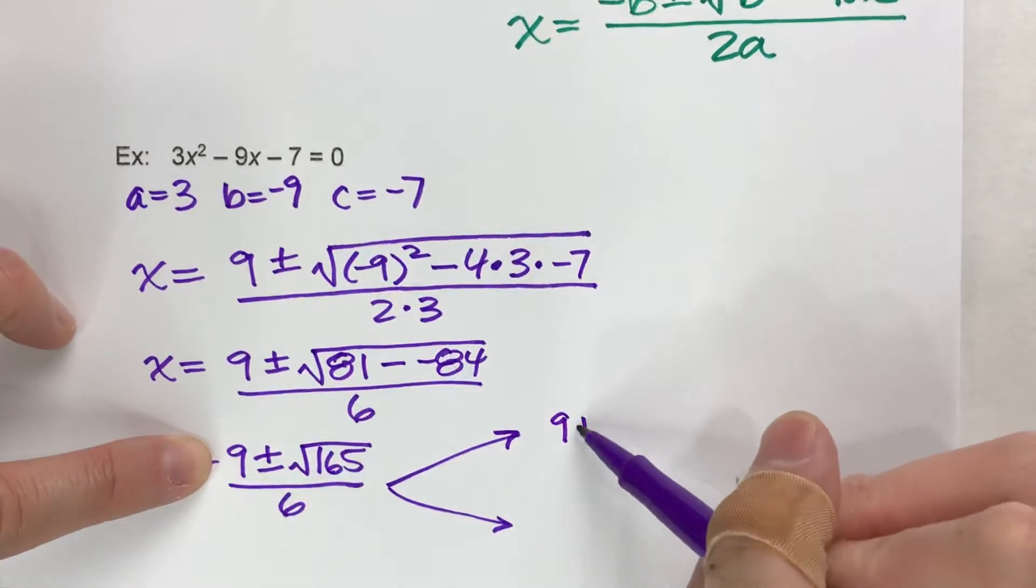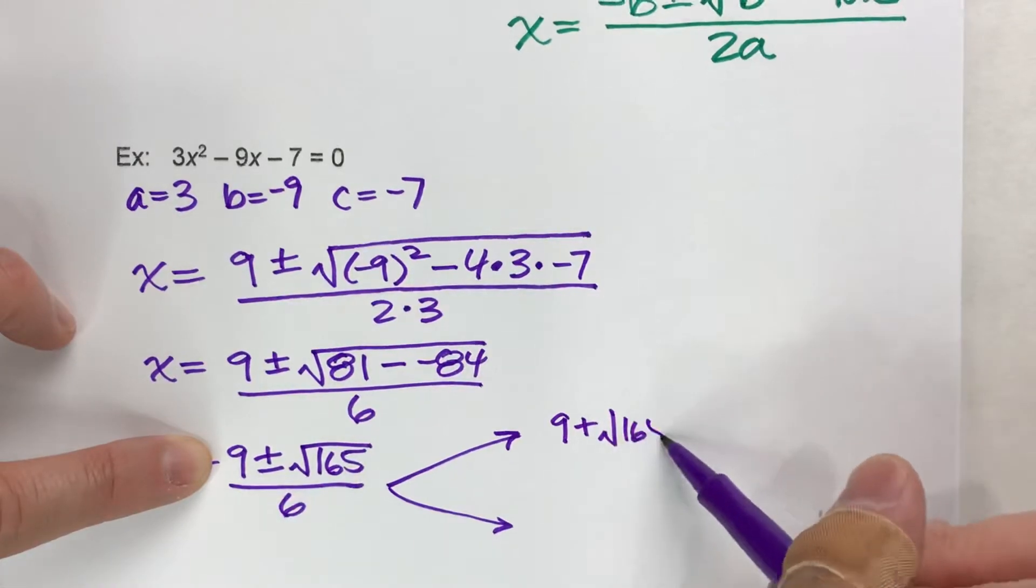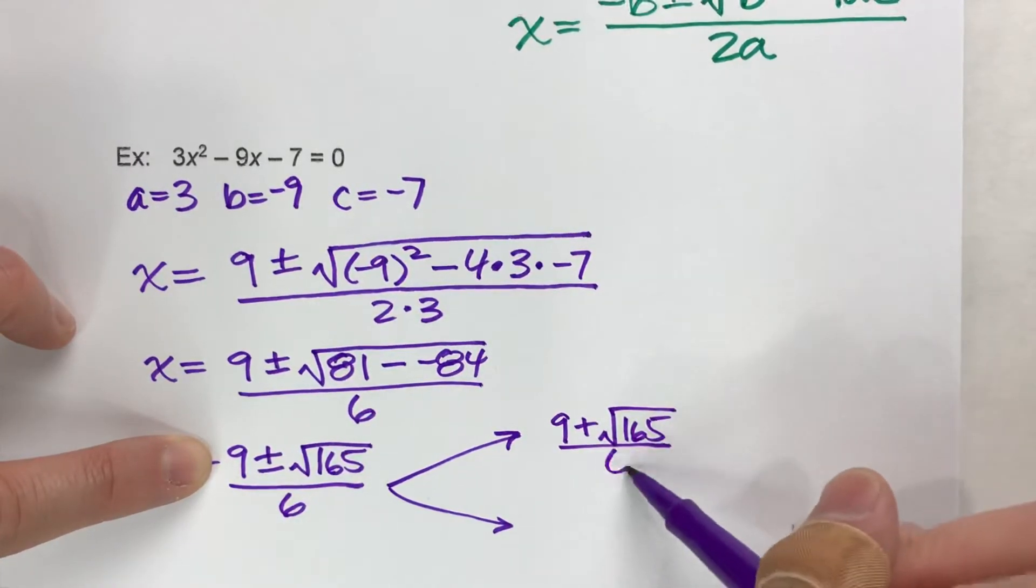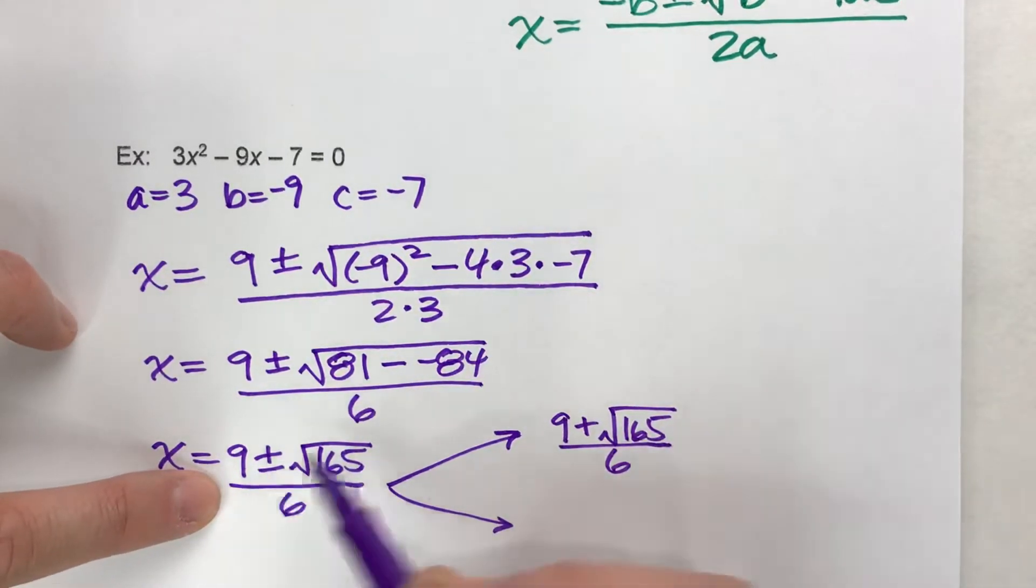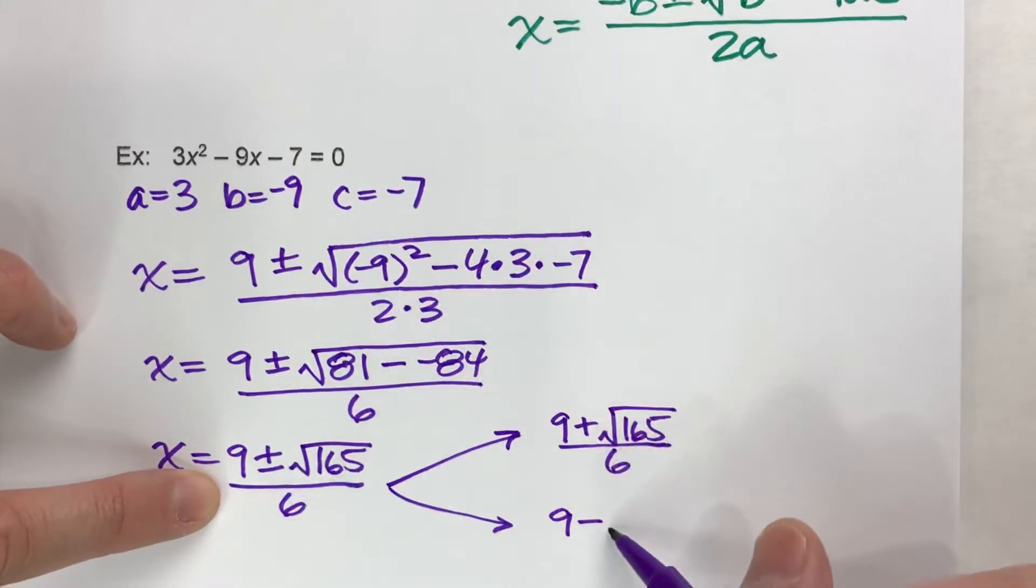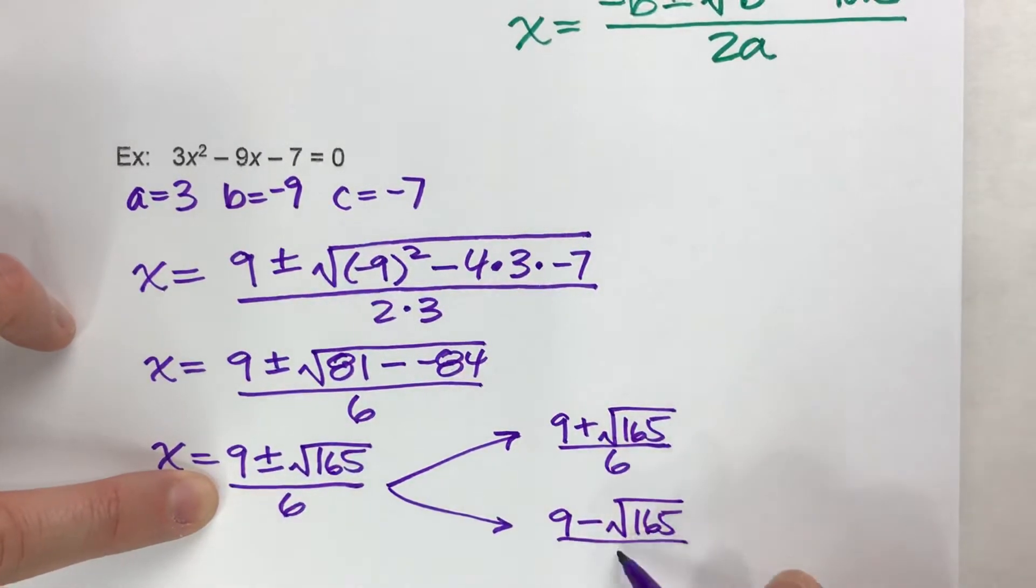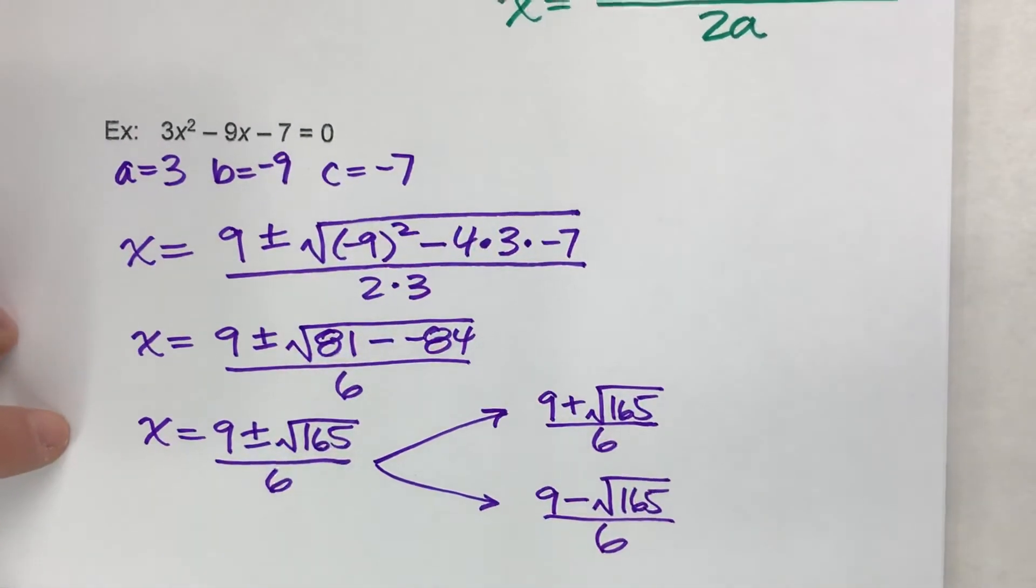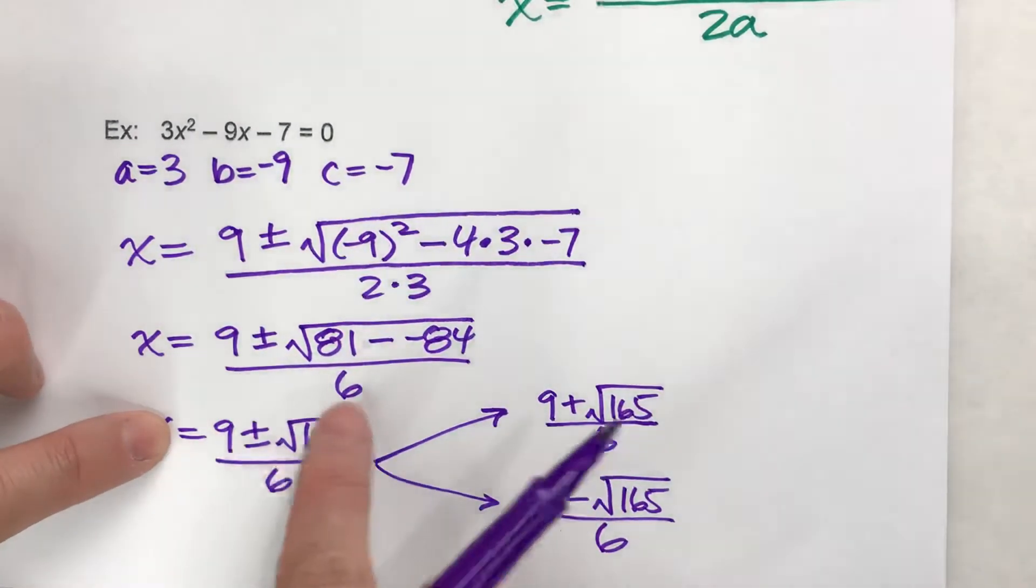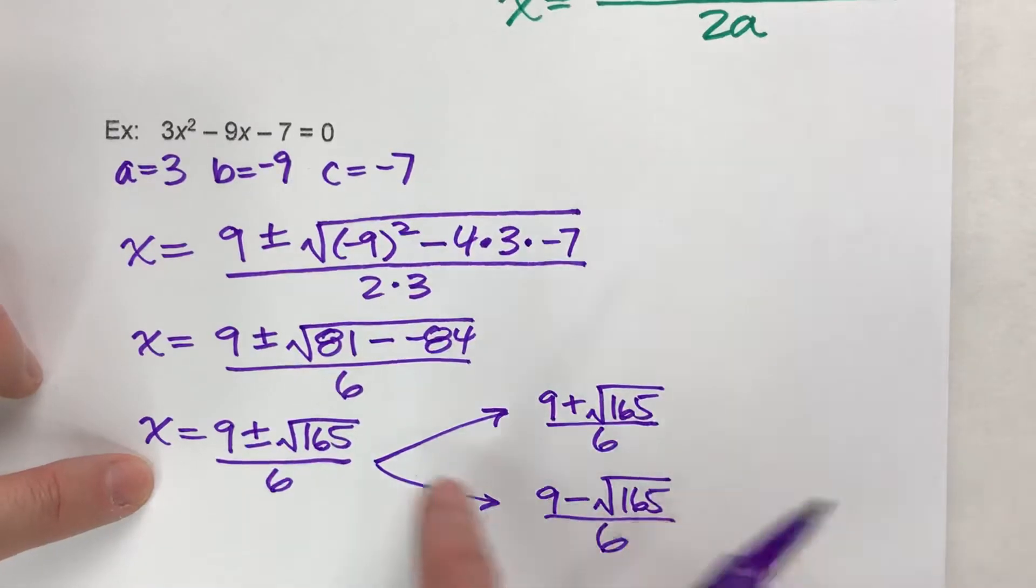One of them is 9 plus the square root of 165 divided by 6. The other answer is going to be 9 minus the square root of 165 divided by 6. And that's what that plus or minus represents. It represents that there's going to be two different possible ways to get your answer. One adding and one subtracting.